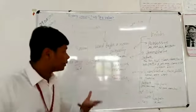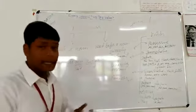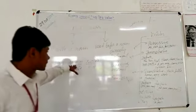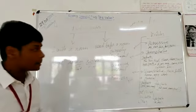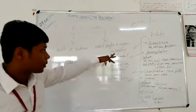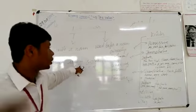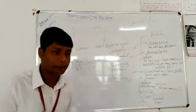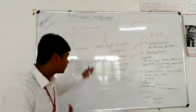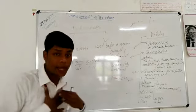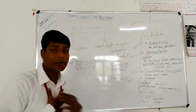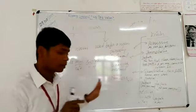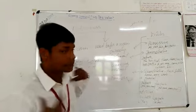In the sentence 'she is my sister,' 'my' is the possessive determiner because it is denoting ownership — the sister belongs to me. That is how possessive determiners work.